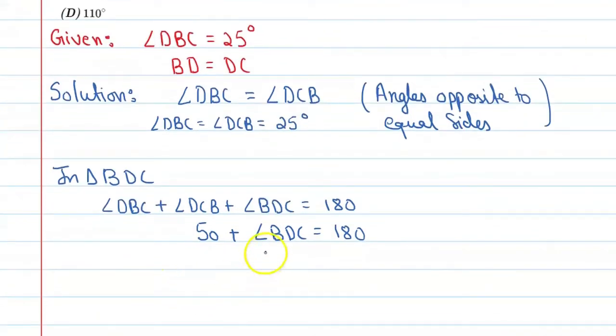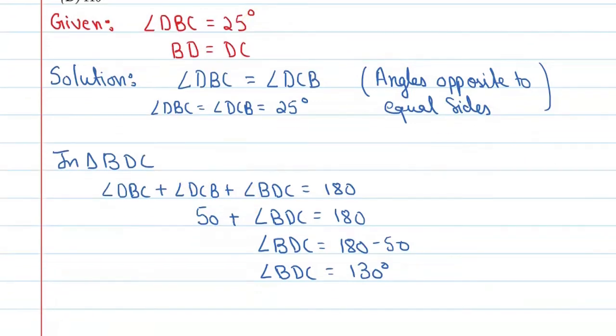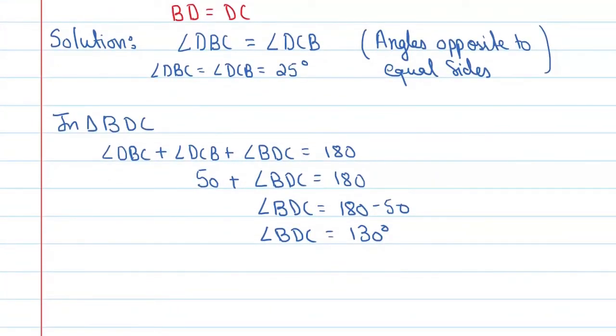So angle BDC is equal to 180 minus 50. So angle BDC is equal to 130 degrees. Alright, so this is the BDC angle value. Now, because ABCD is a cyclic quadrilateral, here you can say ABCD is a cyclic quadrilateral.